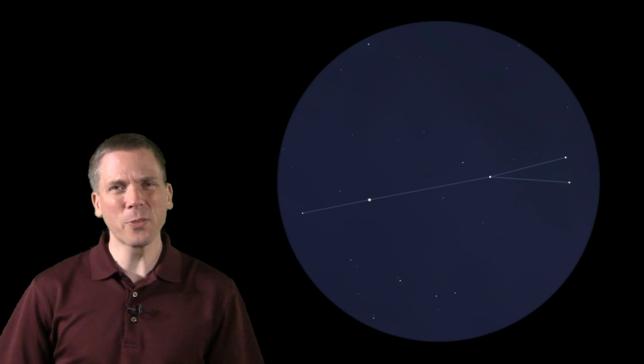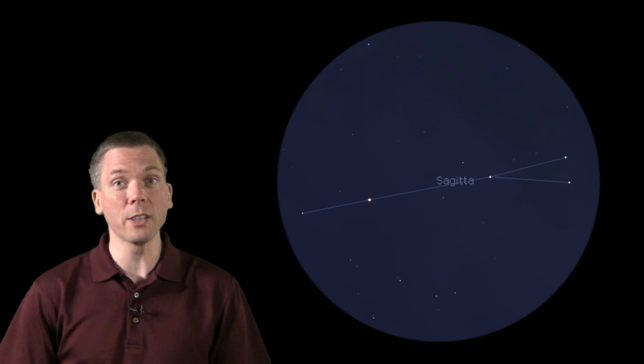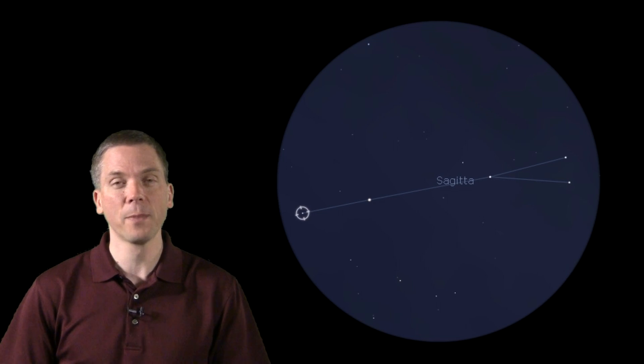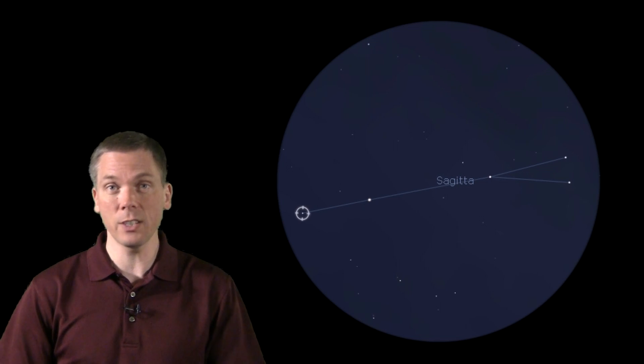Sagitta pretty much fits in a binoculars field of view. With several fourth and only one third magnitude star as the brightest four, it is not exactly a standout constellation. Looking in the direction of the tip of the arrow, we'll see a 5th magnitude star. From the tail feathers to that star, the constellation is all of 6 degrees in length.